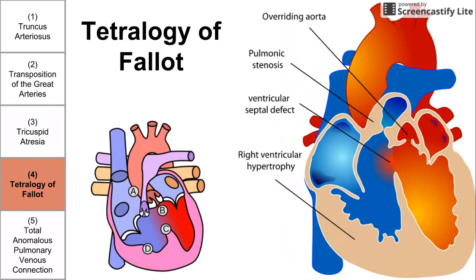Four helps us remember tetralogy of Fallot. Tetralogy means four things — we have four abnormalities here, labeled A, B, C, and D, also labeled in the diagram on the right. A is pulmonic stenosis: the pulmonic valve is narrow and it's hard for blood to get through. Skipping to D, right ventricular hypertrophy, which is a direct result of A. If we have pulmonic stenosis and cannot easily pump blood through the pulmonic valve, the right ventricle is going to get much larger as it struggles to pump blood. This is a compensatory mechanism — right ventricular hypertrophy as a result of pulmonic stenosis.